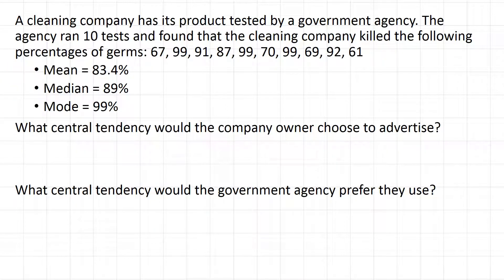We're going to run through a few examples to look at and compare the different central tendencies. A cleaning company has its products tested by a government agency. The agency ran 10 tests and found that the cleaning company killed the following percentages of germs. We've already gone ahead and calculated the mean, median, and mode.